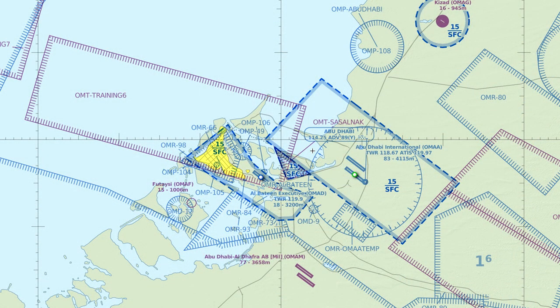Al Dhafra approach to Bryansk Air 276: Roger. Continue your descent and approach inbound. Contact Al Dhafra tower on 118.4 when you have the runway in sight. Transponder frequency 1243.